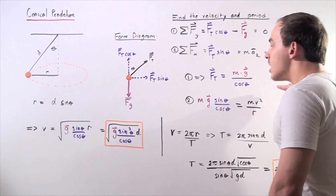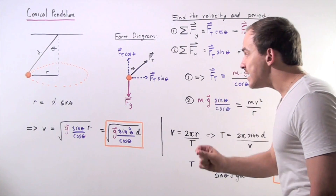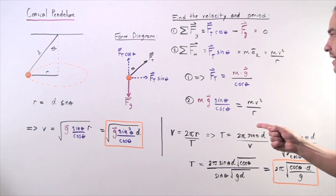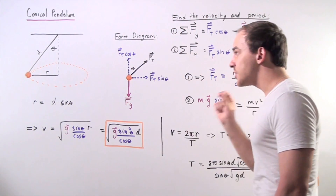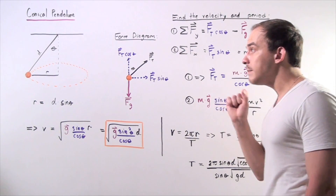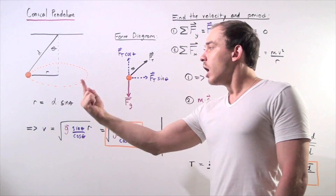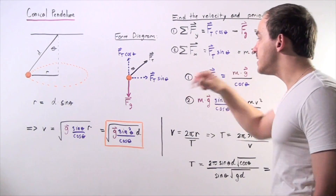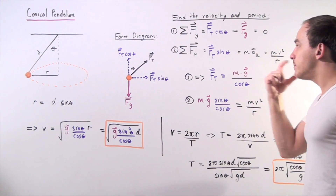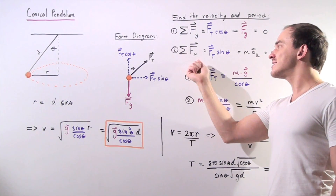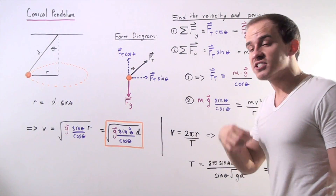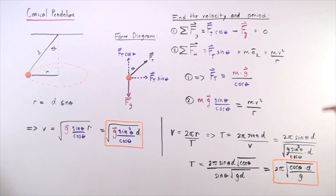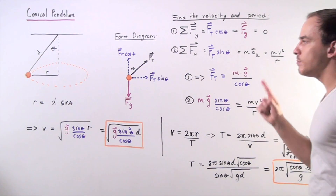Along the x-axis we have one force: tension times sine of theta. Our object is accelerating along the x-axis because it's undergoing uniform circular motion. So the sum of forces along the x-axis equals mass times radial (centripetal) acceleration, which equals m times v squared divided by r.